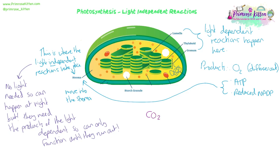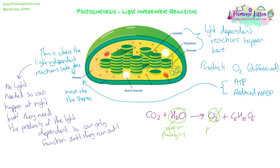Let's have a think about our equation. We've got carbon dioxide and water producing oxygen and glucose. Let's think about what we've already used so far. We used the water in photolysis - we split it and made oxygen from that, which was our waste product. So that's how the light dependent reactions are involved in this equation.